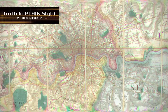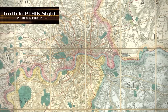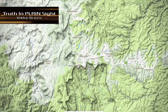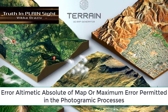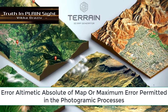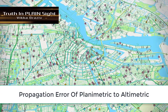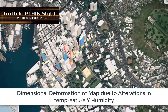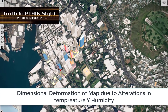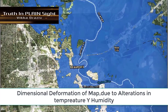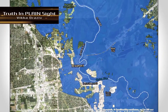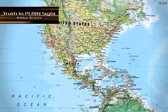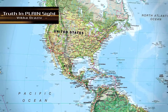In addition to the errors mentioned above, current maps also have errors related to the digitization process, such as absolute altimetric error of the map or maximum error allowed in photogrammetric processes. Propagation of planimetric error to altimetry. Dimensional deformations of the map due to alterations in temperature and humidity. In almost all countries, a large part of the large-scale mapping has been generated by a wide variety of agencies or companies with unknown quality parameters.